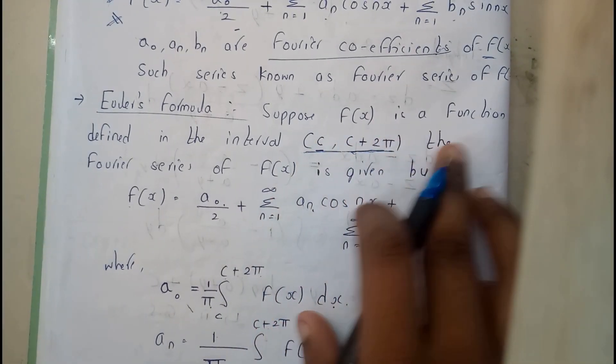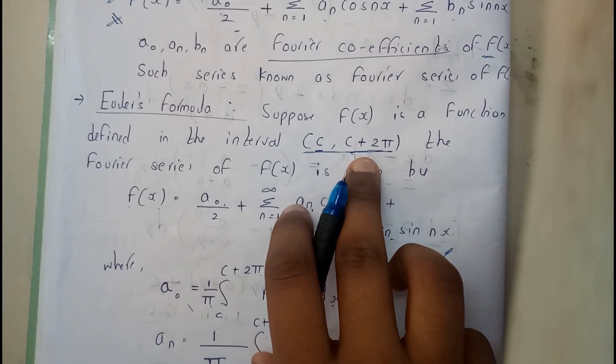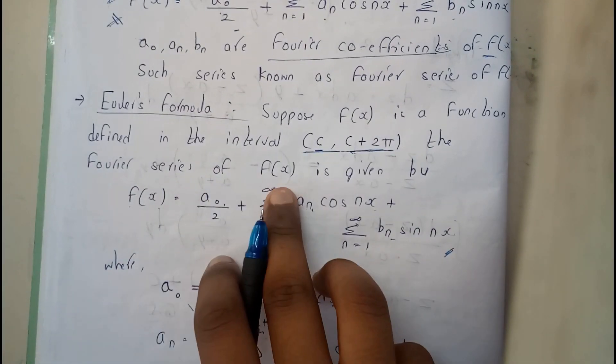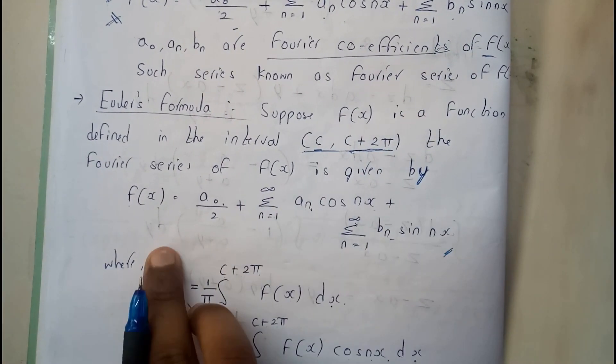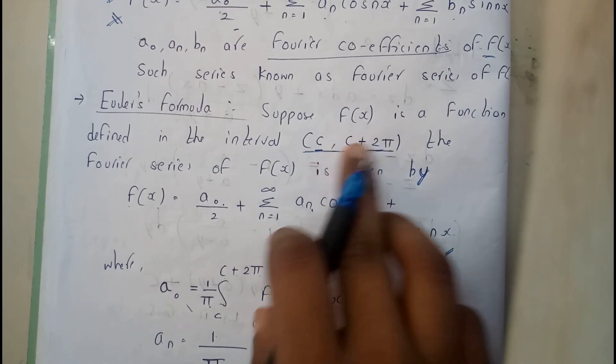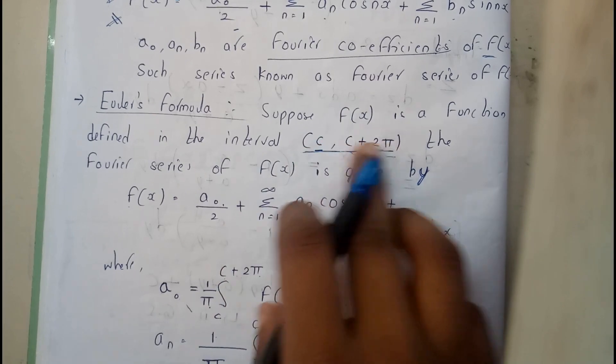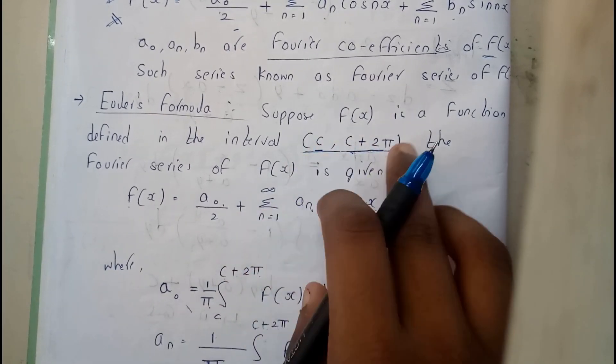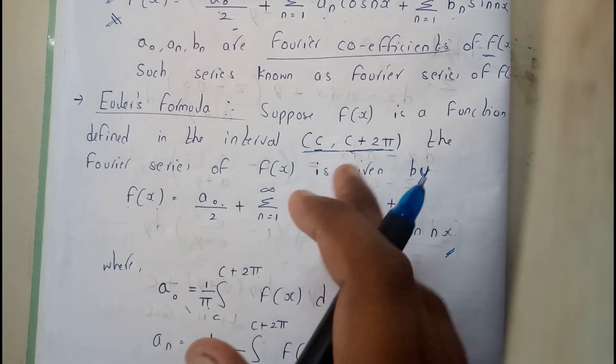Suppose f(x) is a function defined in the interval (c, c+2π). The Fourier series of f(x) is given by... here the interval is (c, c+2π). So it is also equals to 2π, if you observe. If you substitute 0 here, you get [0, 2π] and if you substitute -π, you get [-π, π].